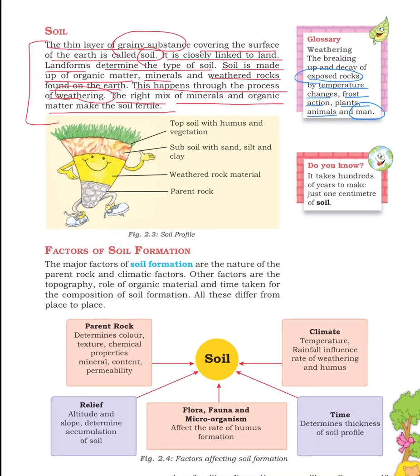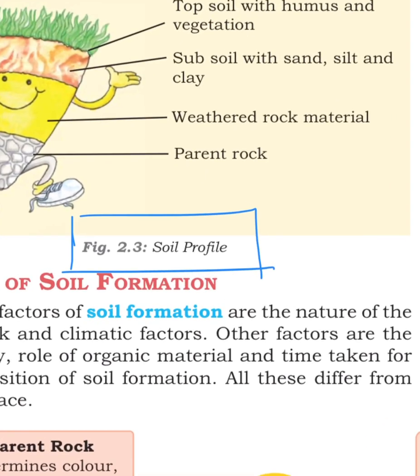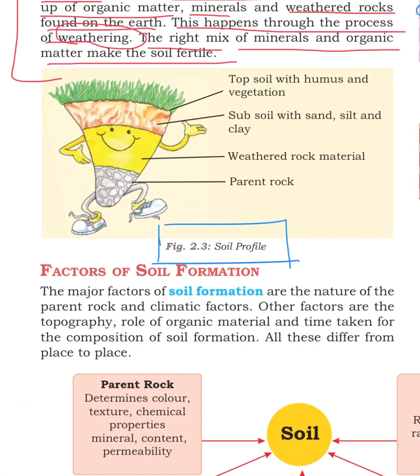Now in this soil definition, there is a small diagram. In this diagram, figure 2.3 shows the soil profile. We call this soil profile, and many times it is also called the soil horizon.